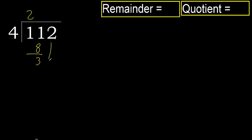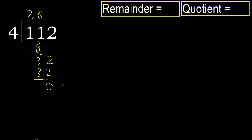Next, bring down to get 32. 4 multiplied by 9 is greater. 4 multiplied by 8 is 32, which is not greater. 32 minus 32 is 0. Next digit: there is no number, therefore finish. The answer is 28.